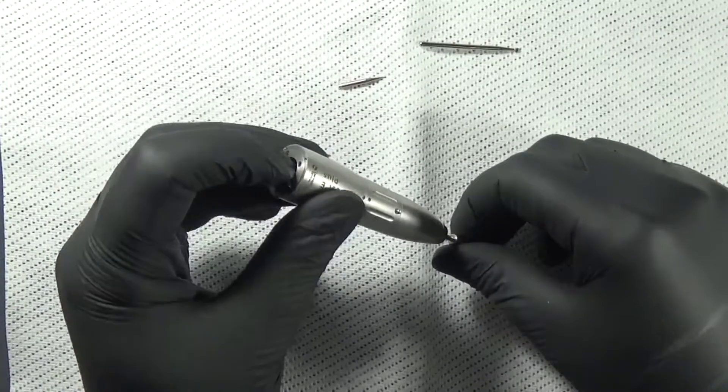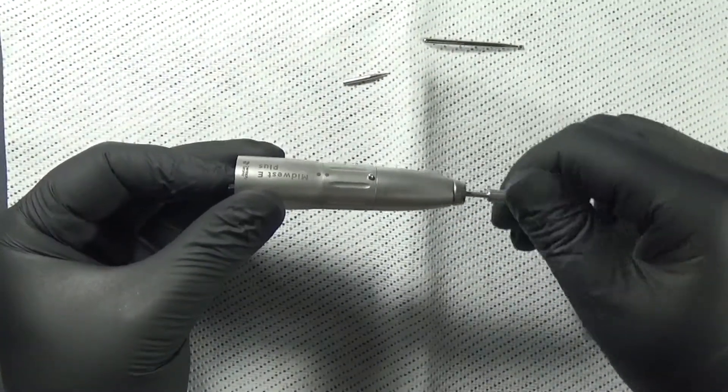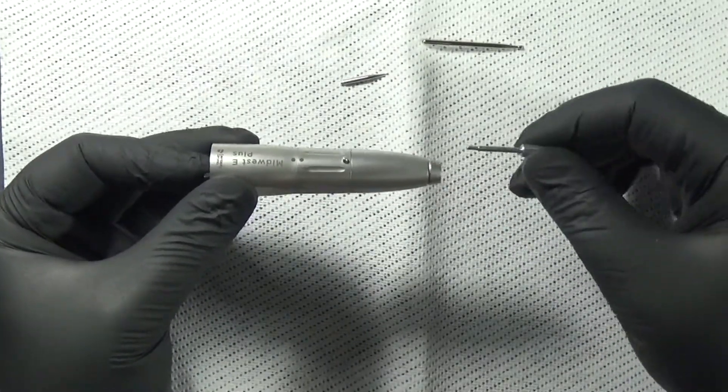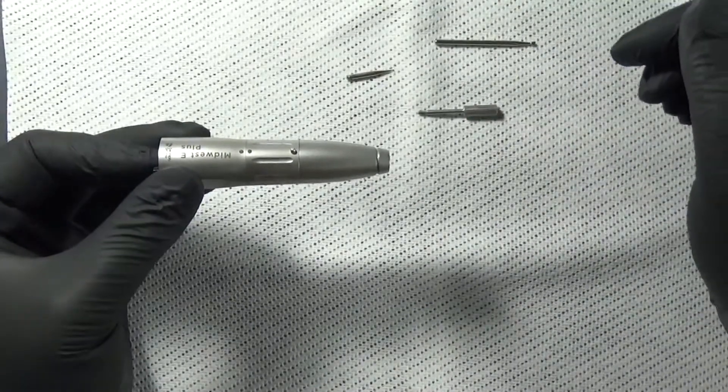Now we're going to unthread the tool from the mandrel. One thing to note, see that wants to spin on the back side? You can either attach to the motor, just put your finger in there so it doesn't spin, and you can unthread the tool out. Now that other piece is down inside.